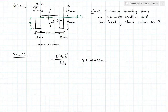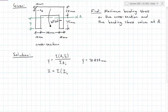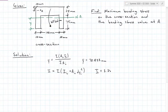Now that I know where the centroid is, I can find the moment of inertia about that centroid using the parallel axis theorem: the sum of I plus A·d_y squared for each sub-area. We find that the centroidal moment of inertia about the horizontal axis is 3.3594 times 10 to the 6th millimeters to the 4th.